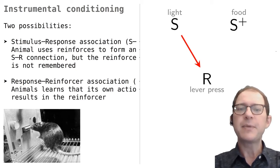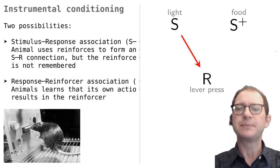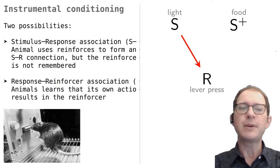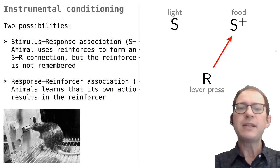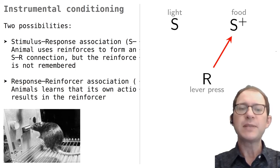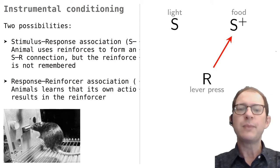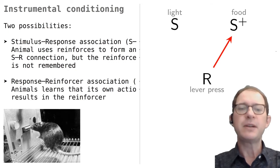So the rat would think something like: oh, I see that light, it's a good time to press the lever. This is very similar to the CS-CR connection in Pavlovian conditioning. The other possibility is that instrumental conditioning creates a connection between the mental representations of the response and of the food. In this view, rats would form a mental image of the fact that pressing the lever leads to food. This is more similar to the stimulus-stimulus view of Pavlovian conditioning.